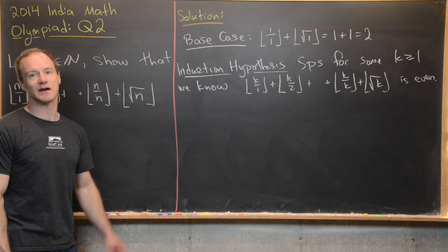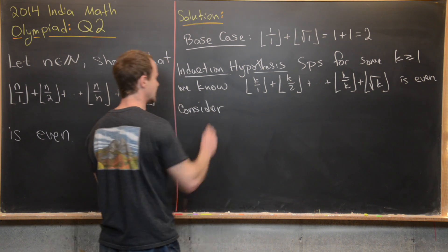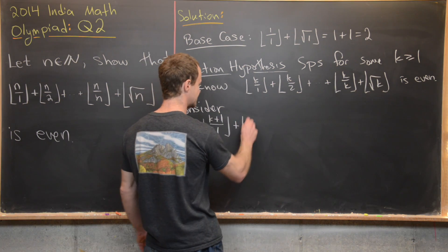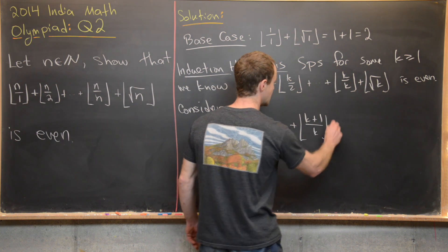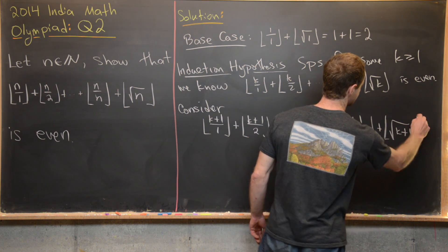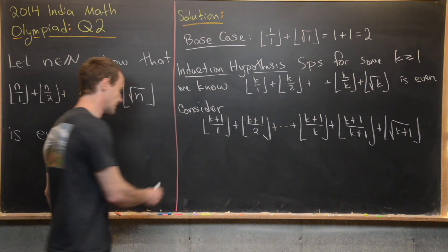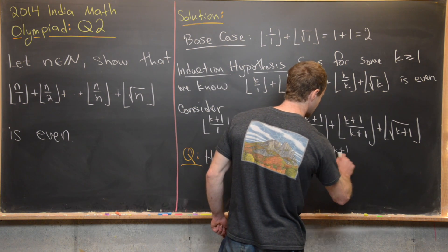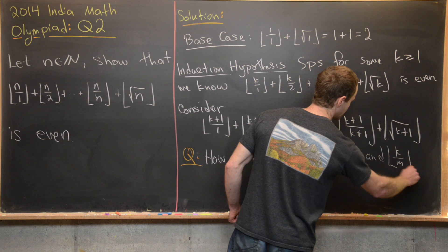Next we consider the induction step — the k+1 case. That looks like floor((k+1)/1) + floor((k+1)/2) + ... + floor((k+1)/k) + floor((k+1)/(k+1)) + floor(sqrt(k+1)). This brings us to an important question: how can we relate floor((k+1)/m) and floor(k/m)?